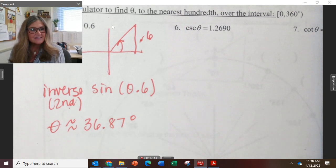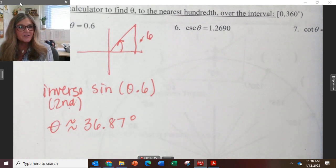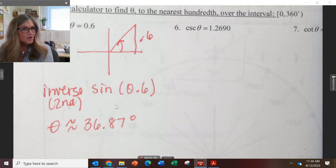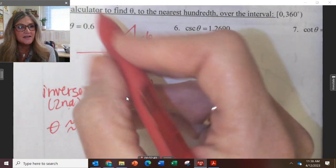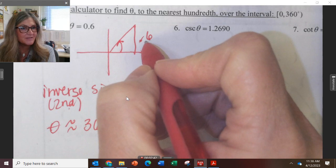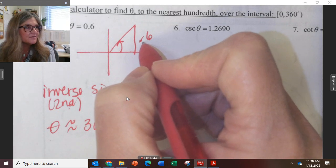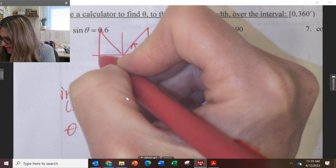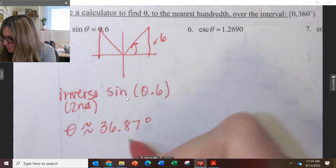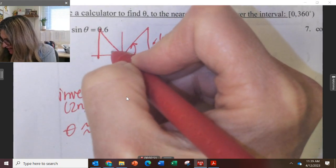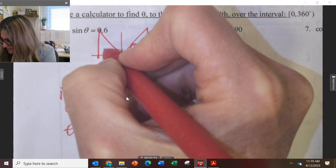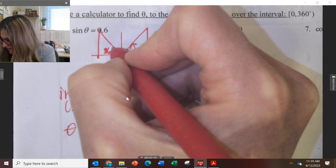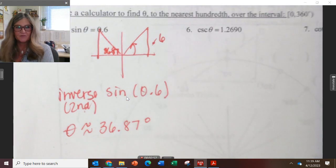But that is not the only quadrant that's going to have sine of that value. Which other quadrant is going to have a positive y value besides the first? The second. So there's also an answer in the second quadrant. The reference angle has to be the same. So this angle right here has to be 36.87.